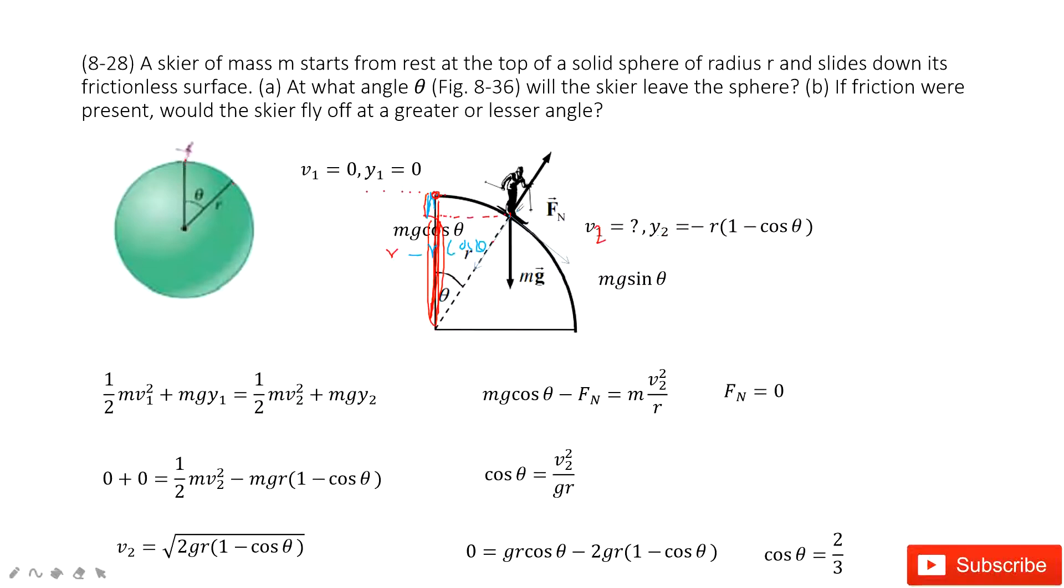Now we input these known quantities. We find it looks like this one. So we get the V2. V2 is given.